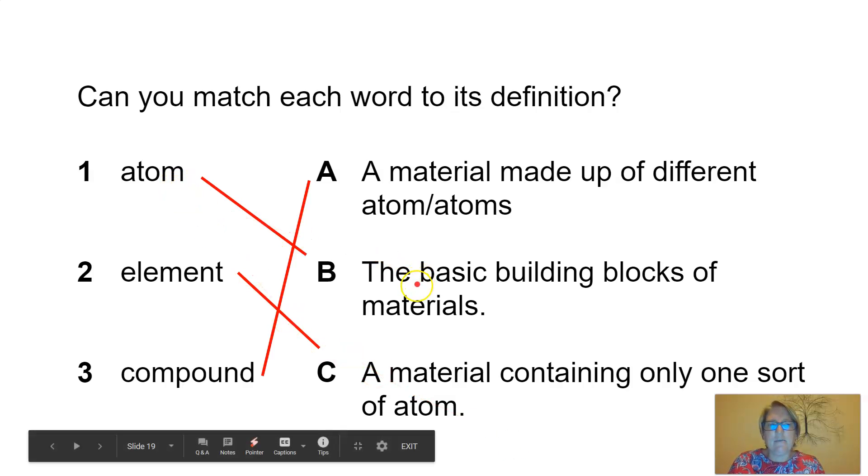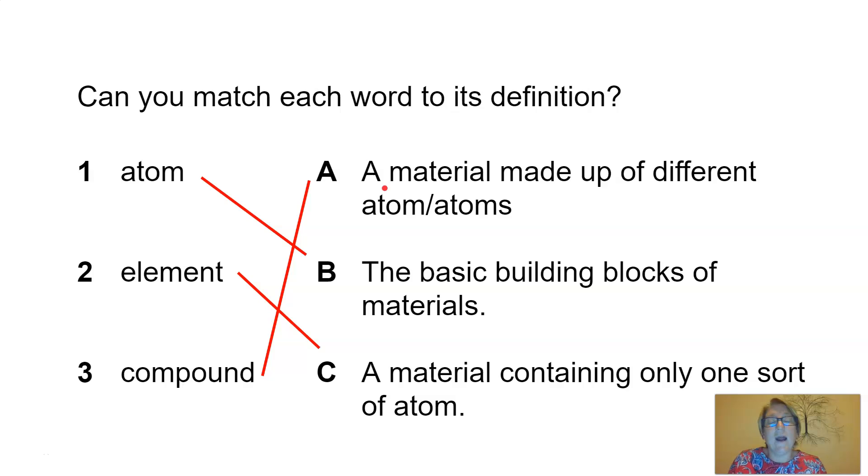Let's go and have a look to see if you got your answers correct. An atom is the basic building block of materials. An element is a material containing only one sort of atom. And a compound is a material made up of different atoms.